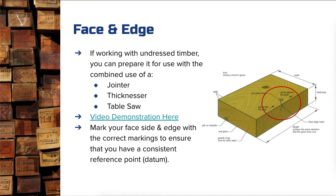Once your boards are dressed, you need to decide which is the nicest, most effective, or most appropriate face side and face edge for your project — which bits do you want facing out to the client at the front. You then put your face side and face edge markings on them: a squiggly mark on the face side and a little arrow on the face edge, indicating this is the main reference edge. From that point on, all markings and processes reference that face side and face edge to avoid any damage to them. In industry we refer to this consistent reference point as a datum.